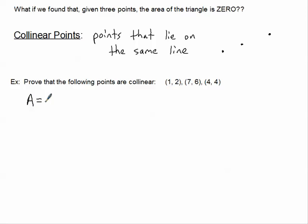Area is going to be plus or minus one half, and then I set up my three by three determinant. I'm going to choose to put the ordered pairs exactly how they're given in the problem again. So (1, 2) and then (7, 6) and then (4, 4). The third column is just going to be filled with ones just like our formula says.